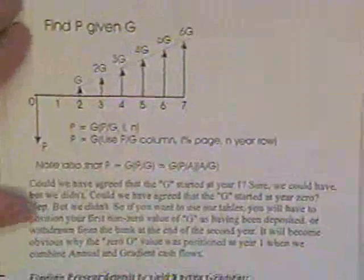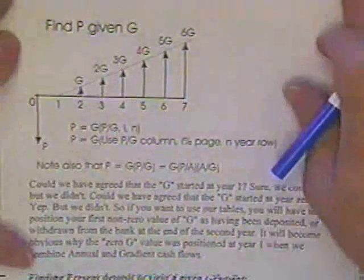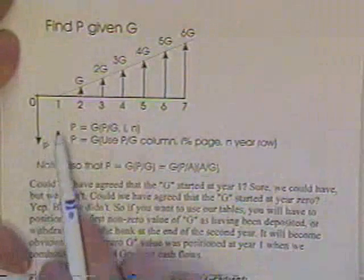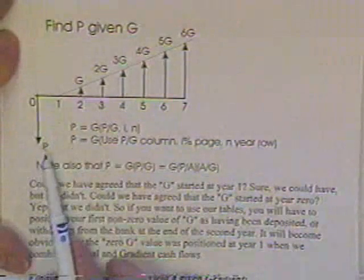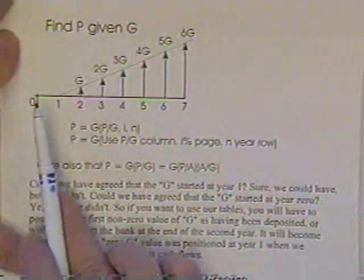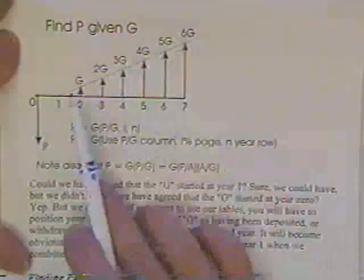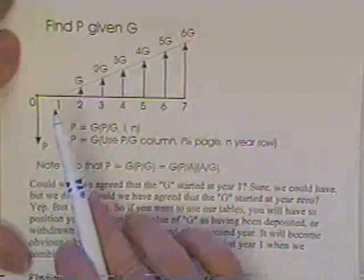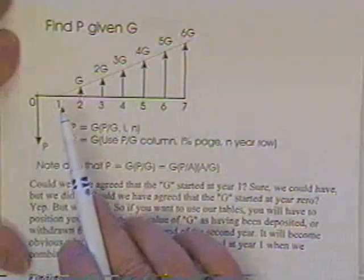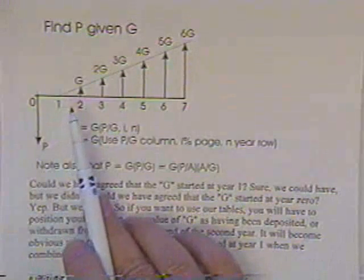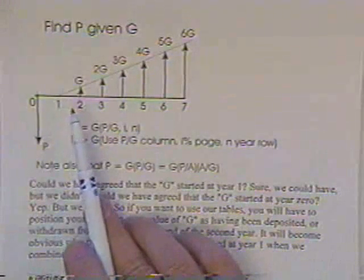Well, if you and I had done it, we might have done it differently. It's too late for that. It's done been decided. And it has been decided that if the present value goes in now, right now, then the gradient starts at year one, and we don't deposit any money now.